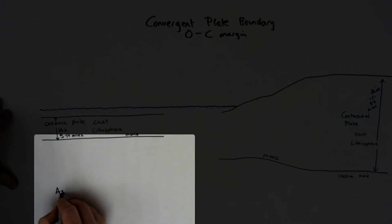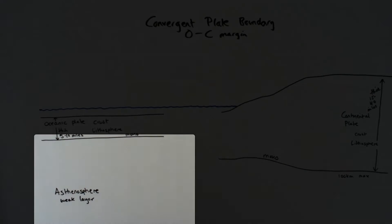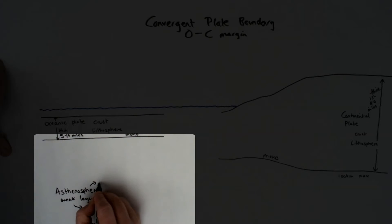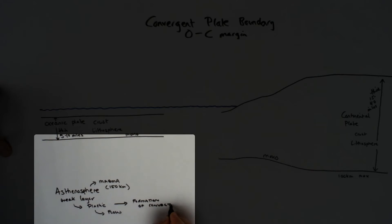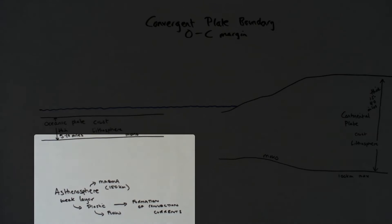Underneath the crust and the lithosphere is the asthenosphere. This is the thicker layer where we have the movement, the convection currents. It's plastic in behavior. It flows due to the heat, and this convection current that exists in this layer is the mechanism that moves and drives plate tectonics.